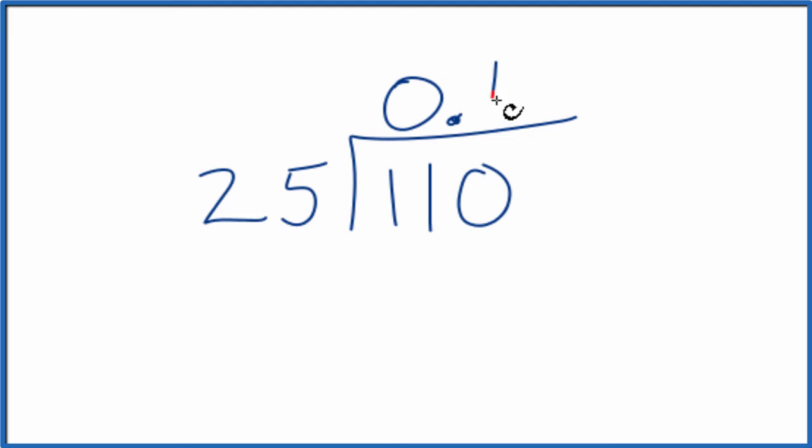So 4 times 25, that's 100. And if we subtract those, we have 10 left over. 25 doesn't go into 10, so let's call it 100.